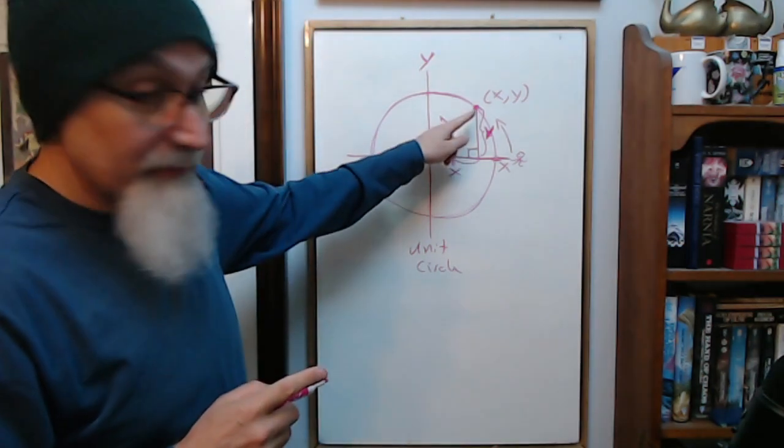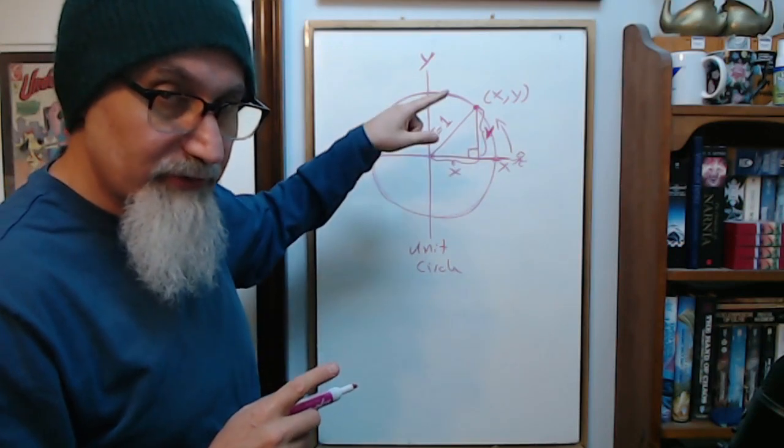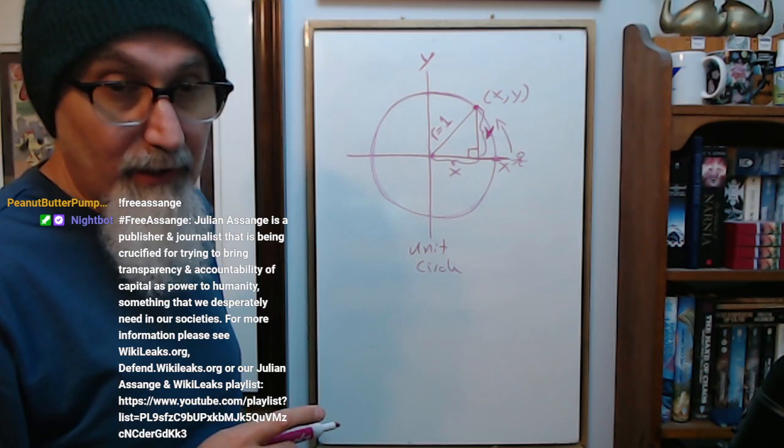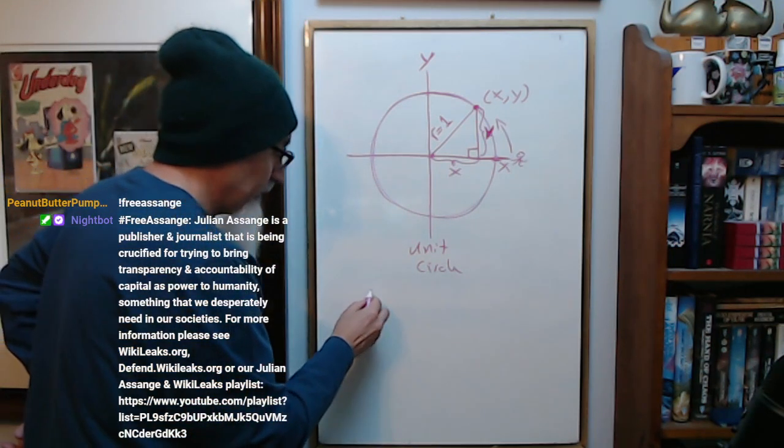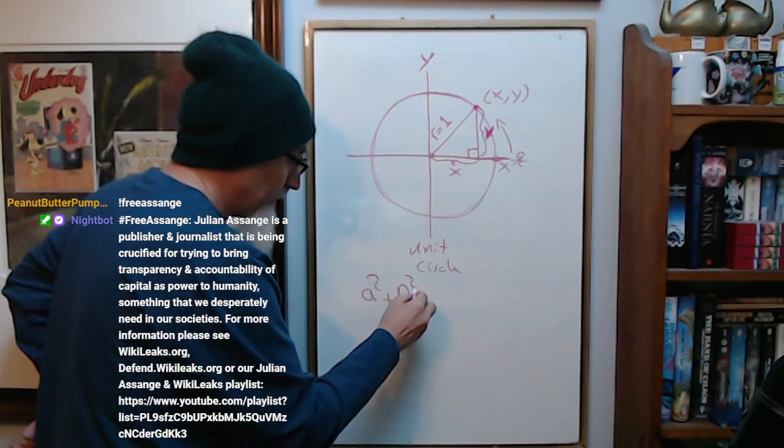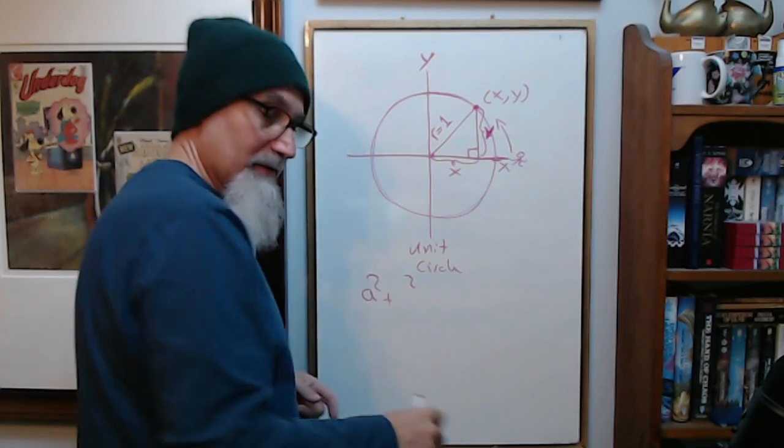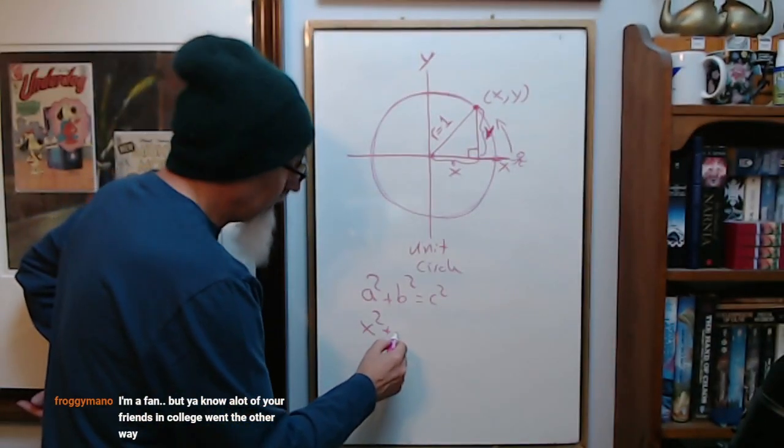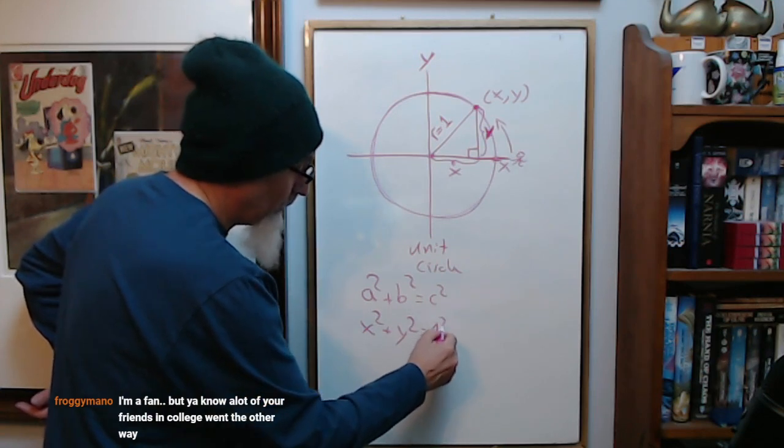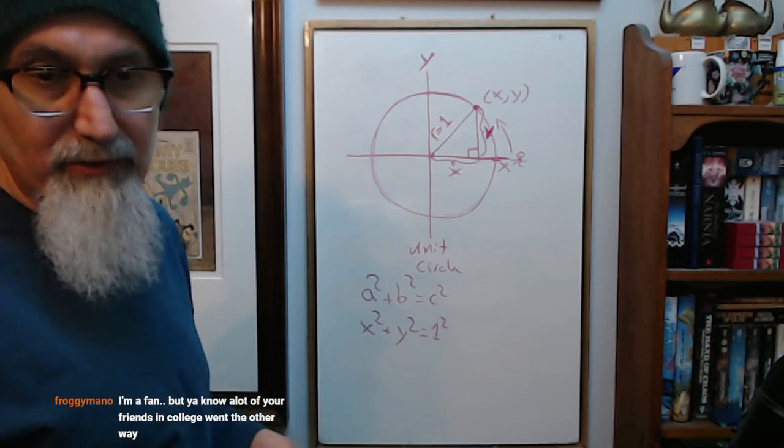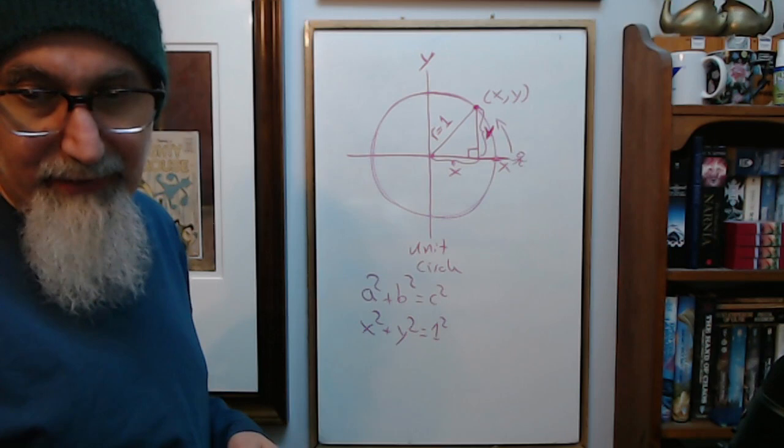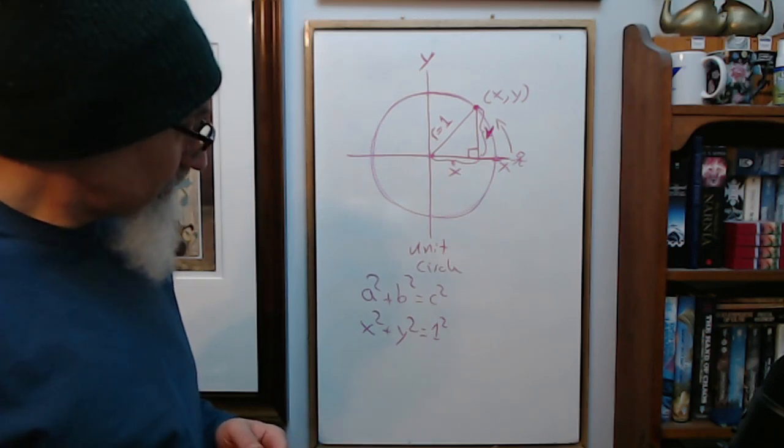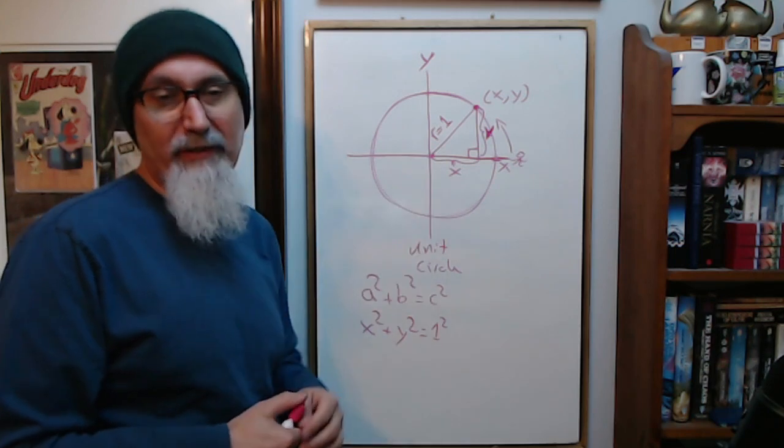We've connected up a triangle to the unit circle. If you remember your Pythagorean theorem, there's a formula for a right angle triangle: a² + b² = c². For this right angle triangle you would have x² + y² = 1² and 1² is just one, so we've got x² + y² = 1. That's one of the formulas we can get from this.